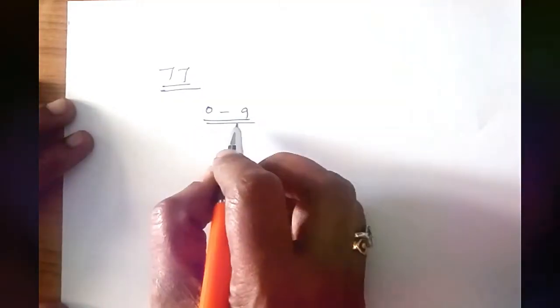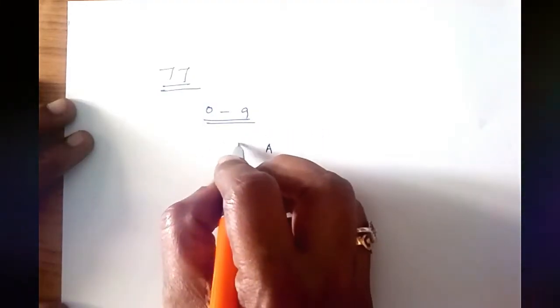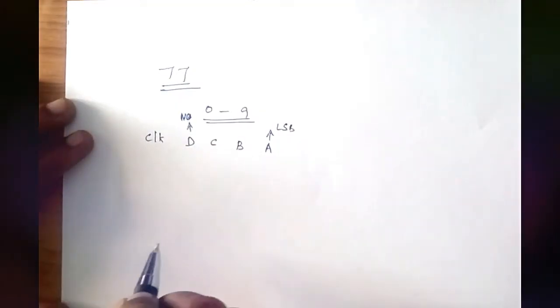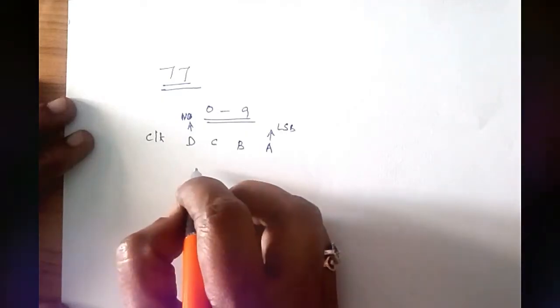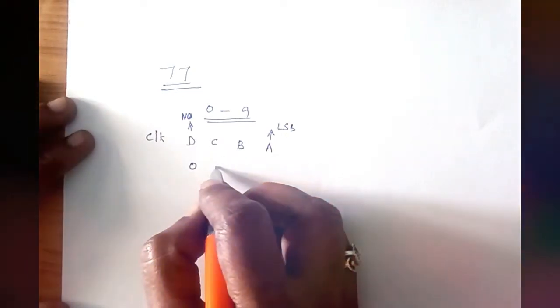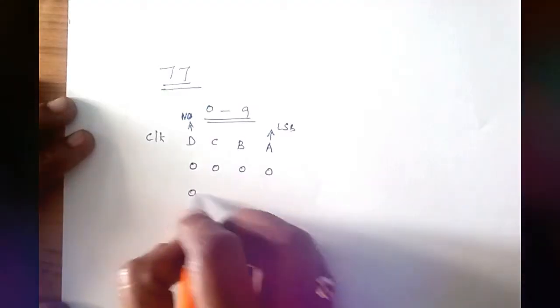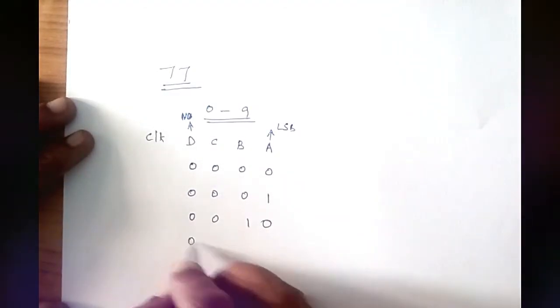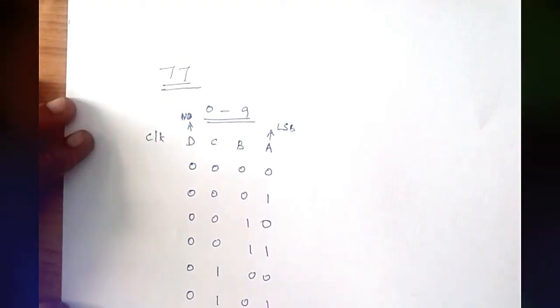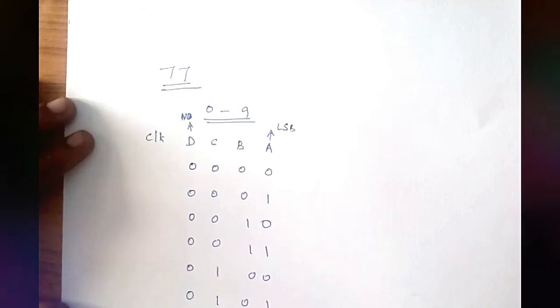For the truth table, we have 0 to 9 numbers and we use 4 flip-flops labeled A, B, C, and D, where A is the LSB and D is the MSB. We also write the clock pulse. The BCD values from 0 to 7 are: 0000, 0001, 0010, 0011, 0100, 0101, 0110, 0111.